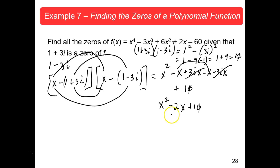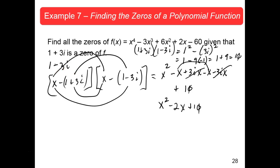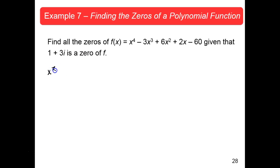If this is a factor, that means it should go into your function with exact numbers. I'm going to clear all the writing off here so we'll have room to write something else. X squared minus 2x plus 10, we're going to divide that by long division into x^4 - 3x^3 + 6x^2 + 2x - 60. Do the long division.